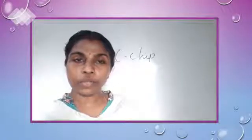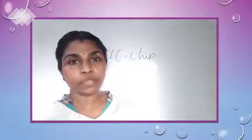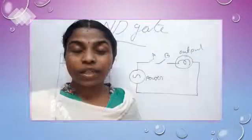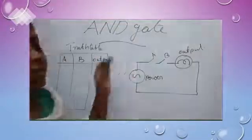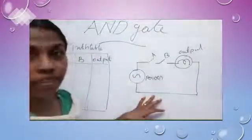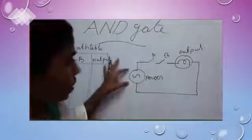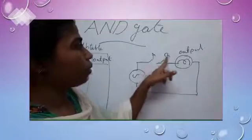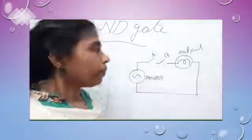In this video, I am going to explain different types of logic gates. Now, I am going to explain AND gate. This is a circuit diagram of AND gate. This is power, this is output, and A and B are the switches.